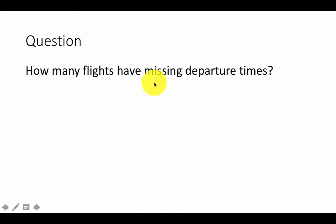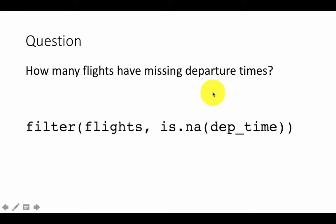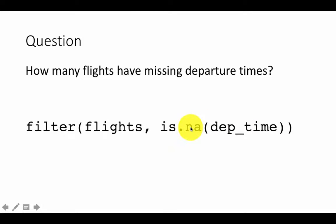The question asks how many flights have missing departure times — meaning the value is unavailable or NA. To do this we can use the is.na function, so we say filter flights and include only those rows for which this condition is true: is.na(departure_time). If the departure time is missing, is.na will be true and only those rows will be included in the results.